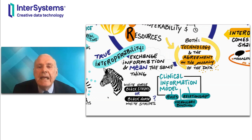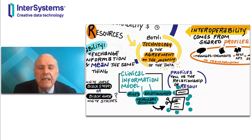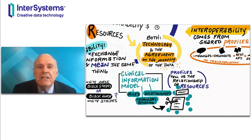Those specific definitions of a data concept for a computer system are called clinical information models. They include all the rules that apply to that data concept, the relationships between data elements within it, and the vocabulary or terminology bindings needed to describe that data concept.